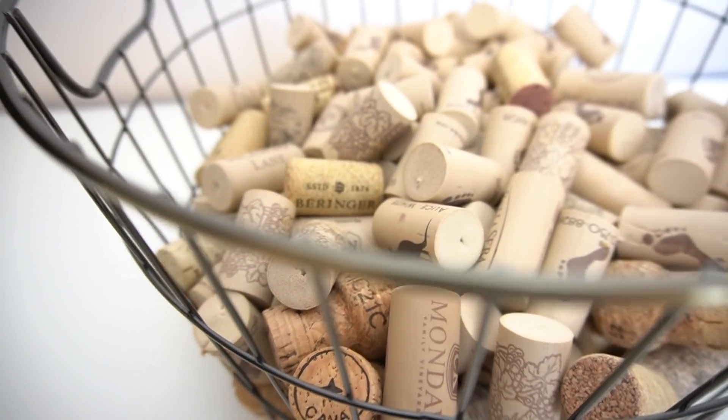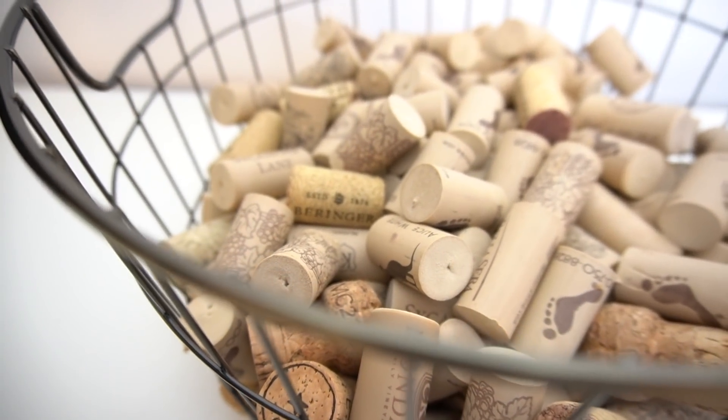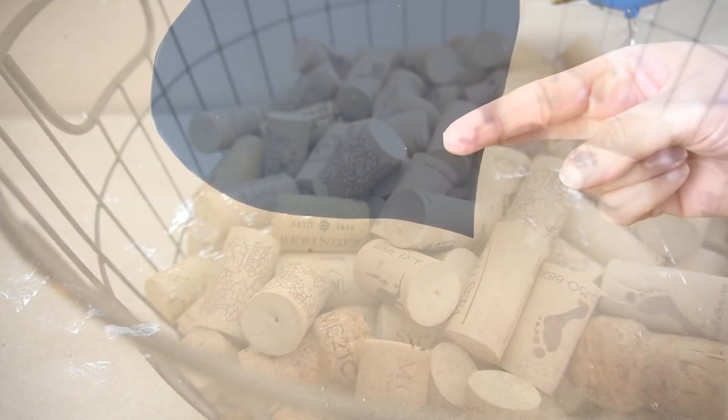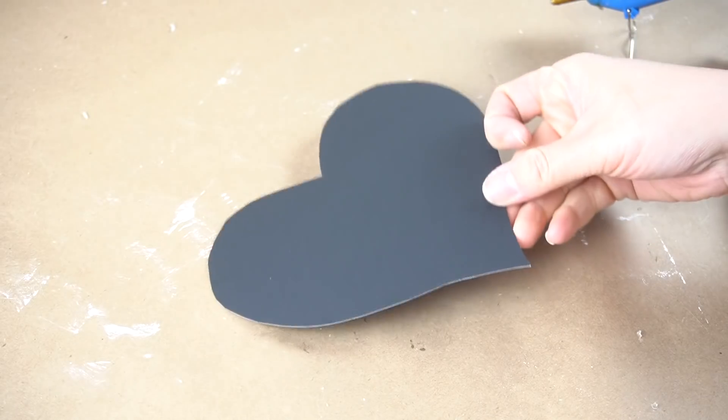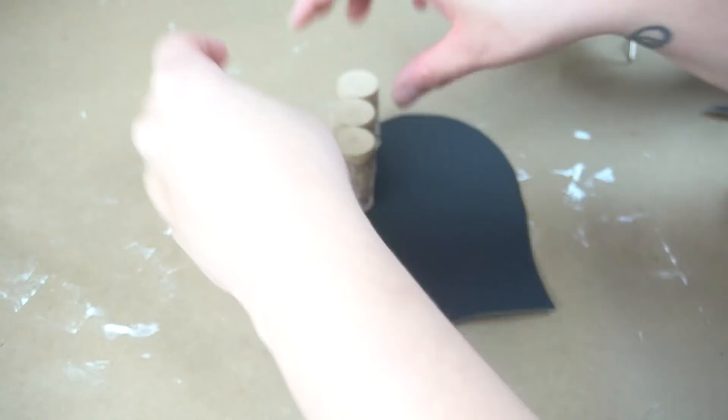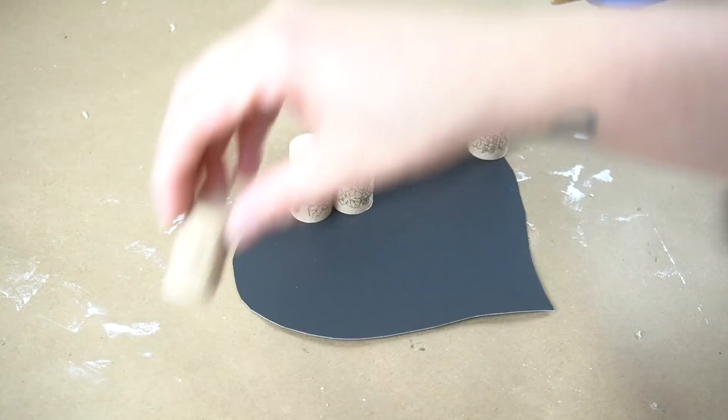For the final trash to treasure, I had this basket of cork that I had been collecting since last week. I'm just kidding. For a couple years now, and I cut some of that black poster board that I had again left over and made it into a heart. Then I placed a border of corks all around it.